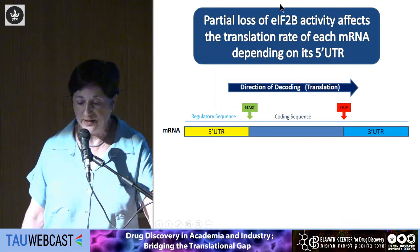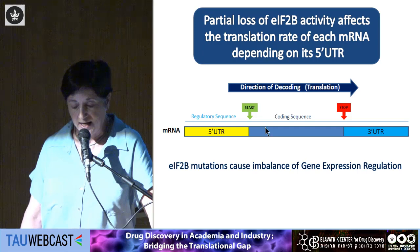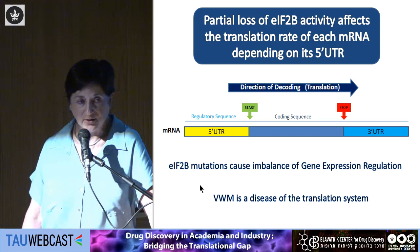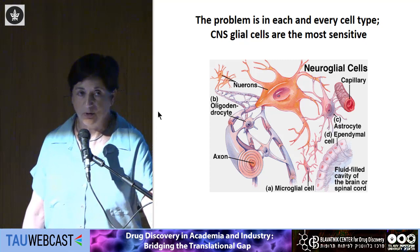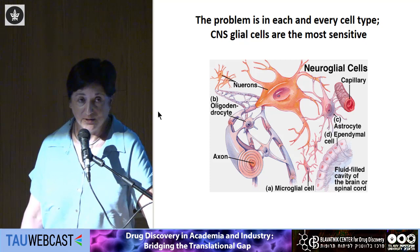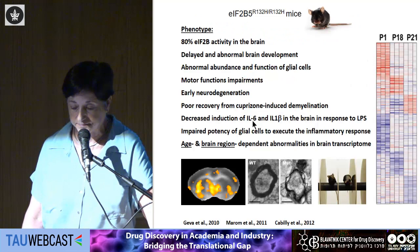We learn from this that partial loss of EIF2B activity affects the translation rate of each mRNA depending on its 5' UTR, which means EIF2B mutations actually cause imbalance of gene expression regulation. Vanishing white matter disease is actually a disease of the translation system. The problem is in each and every cell type, but CNS glial cells are the most sensitive ones — this was a mystery for a long time, but we think we solved why astrocytes and oligodendrocytes are the most sensitive cell types to EIF2B mutations.